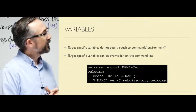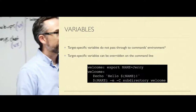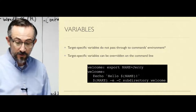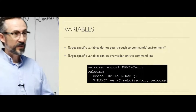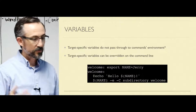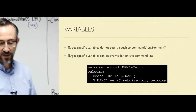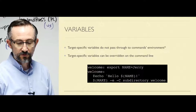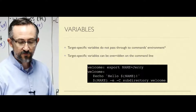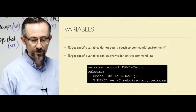There are things called target-specific variables, and those do not pass into the commands' environment — I've got a little asterisk there, remind me about that. You can set variables globally, which is typically how things are done in Make — it's just a big pile of global variables — but you can also set them on a per-target or per-rule basis. These are extremely useful for creating modular Make files. You can think of them almost as lexically scoped variables for the rules or targets that they match.